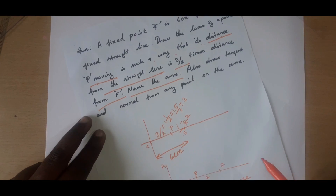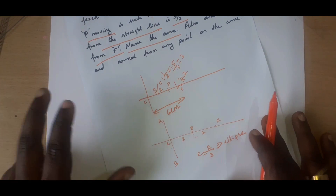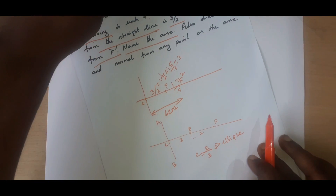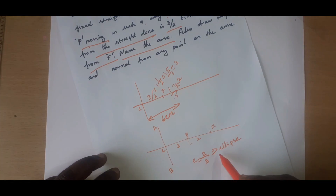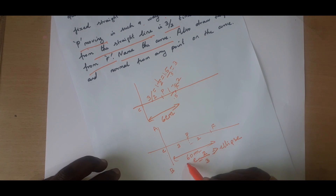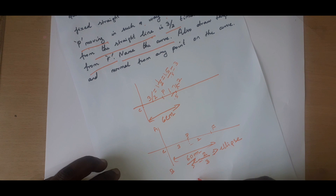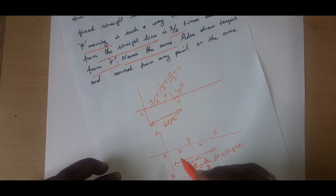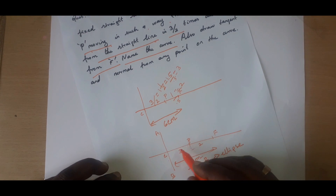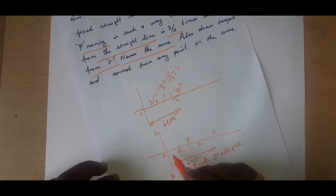Here is how we are going to proceed. The total distance is 60 millimeters. Divided by 3 plus 2, which is 5, gives 12. So each value will be 12 mm, and we are going to divide into equal parts of 12 mm each.